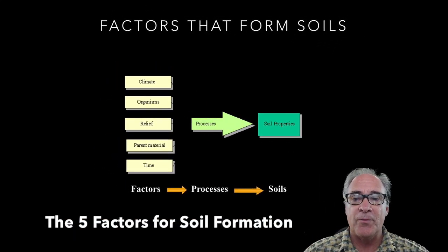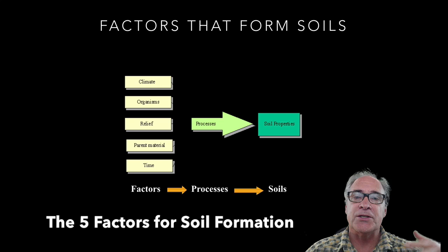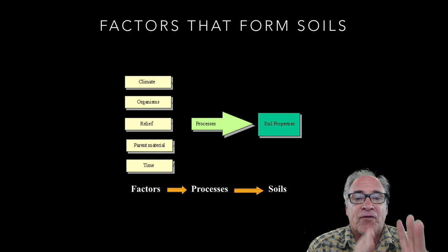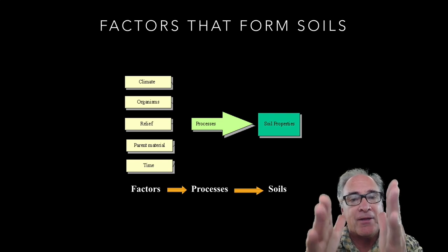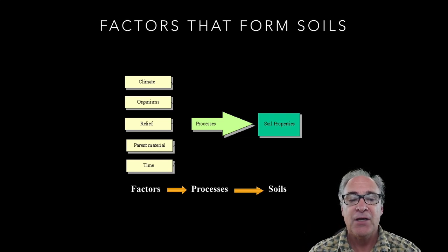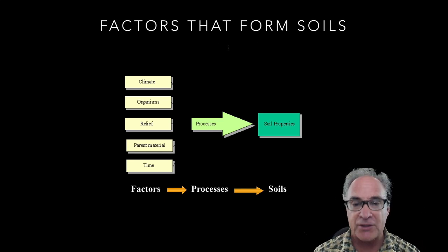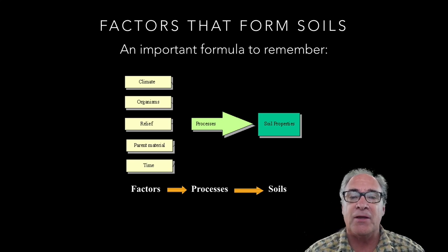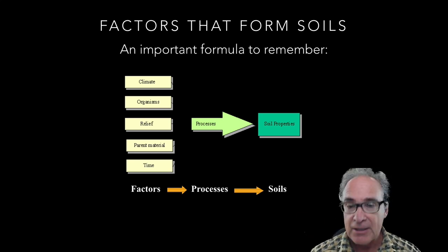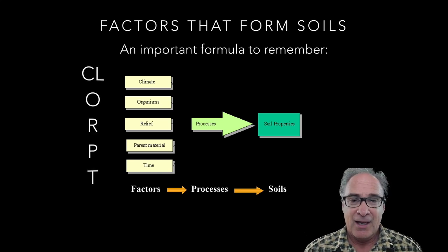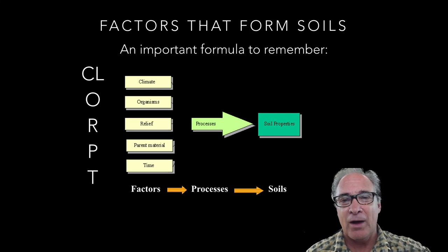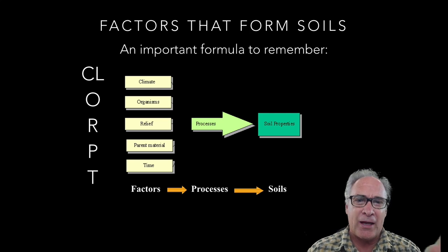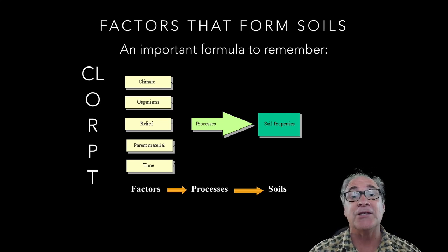If we look at soil formation as a whole, you're going to see two things going on. First of all, there are factors — five factors that really dictate what's going to happen on the processing side of things. I want to teach you a formula before we get started; it's a really important formula. It's called CLORPT. I know, I resisted learning it as well, because it is kind of strange and funky. But once you learn this little formula, it really does help you understand.